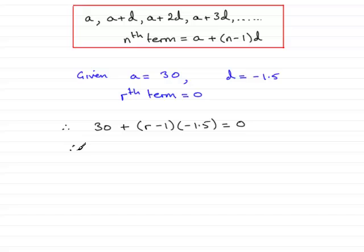what we've got is the 30 here, and then minus 1.5 times r is minus 1.5r, and then minus 1 times minus 1.5, that's going to be plus 1.5, and that equals zero.